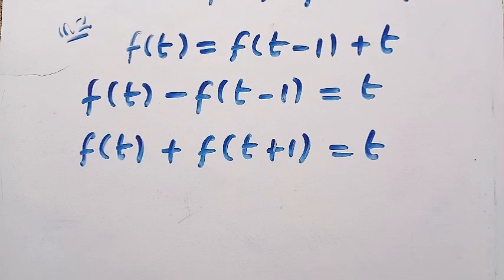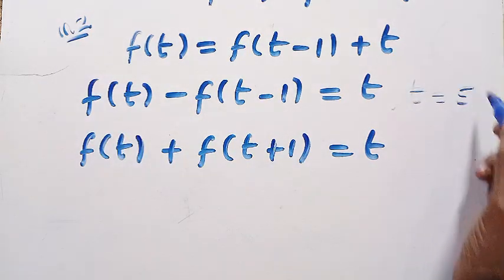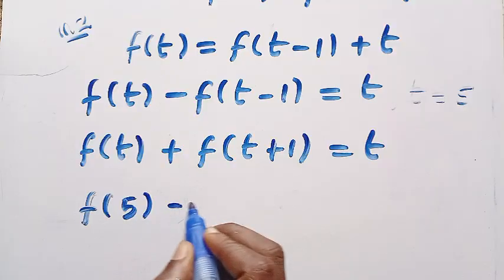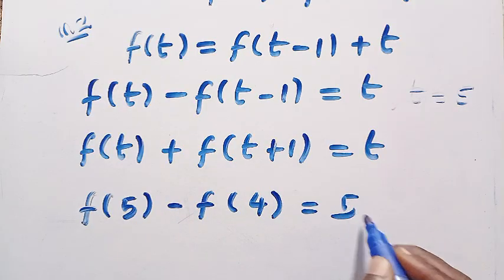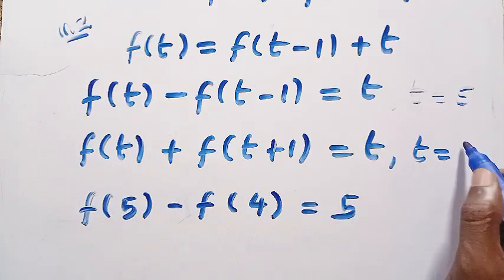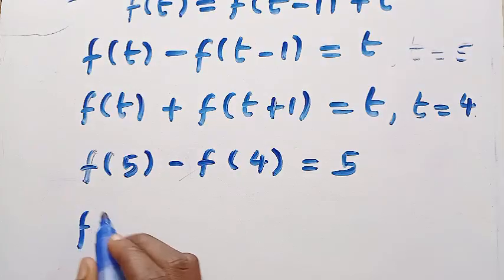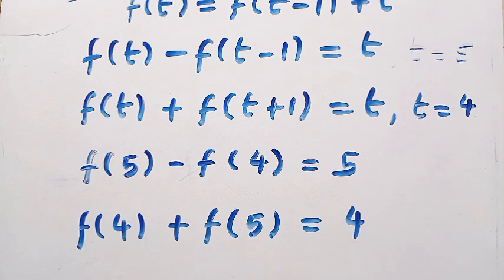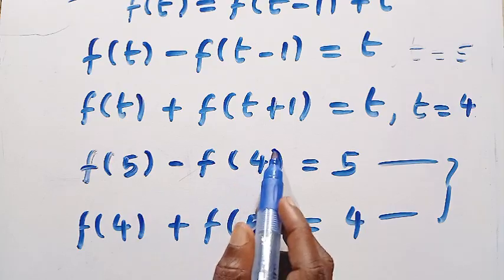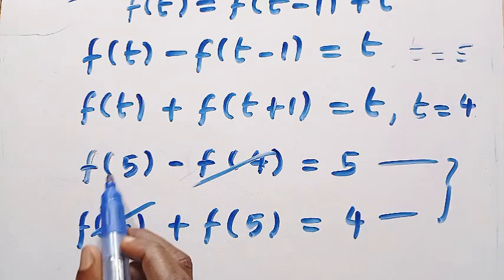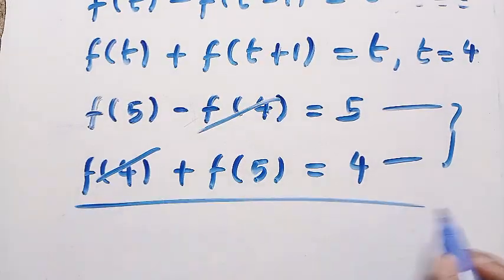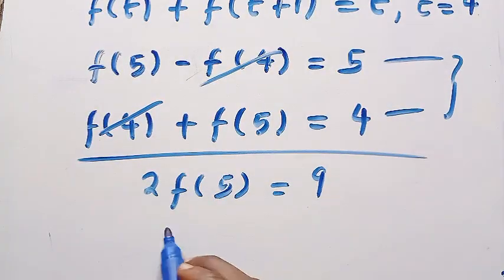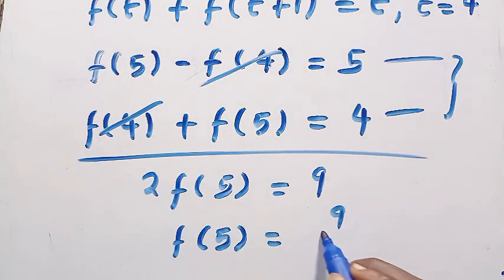Let t equal 5 in the first equation: f(5) − f(4) = 5. From the second equation, let t equal 4: f(4) + f(5) = 4. Adding these two equations together, f(4) cancels, giving 2·f(5) = 5 + 4 = 9. Therefore f(5) = 9/2.